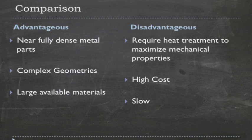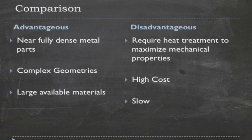One additional disadvantage is that the support material in the SLM process is the same as the build material, making it difficult to remove. The way this is addressed is by tuning the process parameters so that the support structure is mechanically weaker than the build material — introducing more porosity — making it easier for the user to remove the support structures.